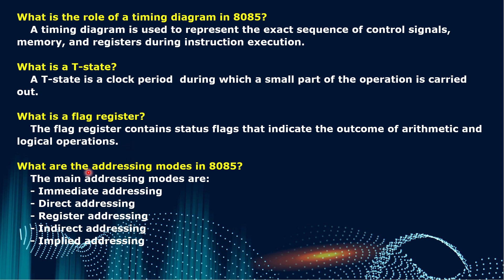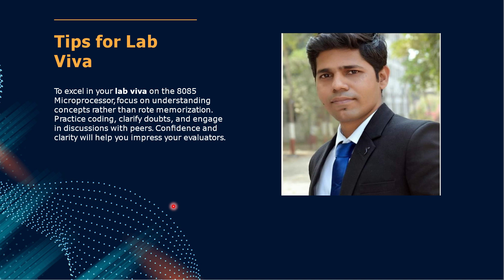What are the addressing modes in 8085? This is a very important question in the Viva and practical examination of microprocessor. There are five addressing modes: immediate addressing mode, direct addressing mode, register addressing mode, indirect addressing mode, and implied addressing mode.